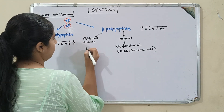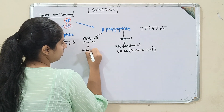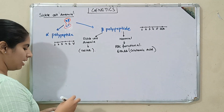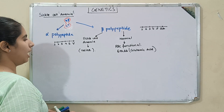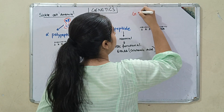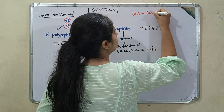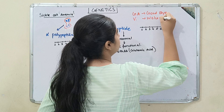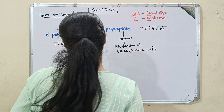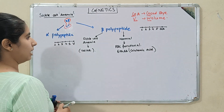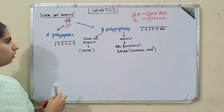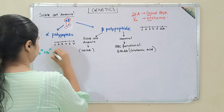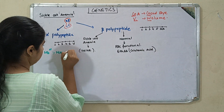So in sickle cell anemia, valine is welcomed and glutamic acid is said goodbye. The normal hemoglobin has both alleles normal (NN). In sickle cell anemia, either one gene is affected (SN) or both genes are affected (SS). The normal RBC shape is biconcave disc shape, but in sickle cell anemia the RBC becomes sickle-shaped.